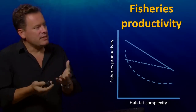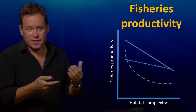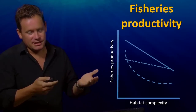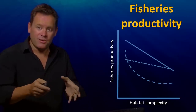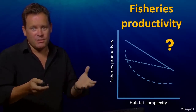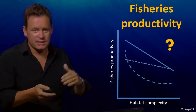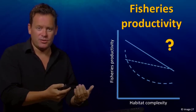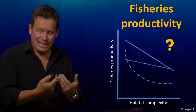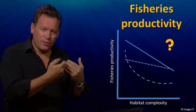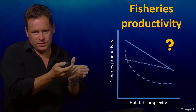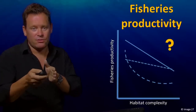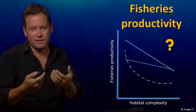Ultimately, we want an ecological production function — a relationship between fisheries productivity and the complexity and health of a coral reef. At present we often don't know the shape of that relationship: is it a linear decline, or is it curvilinear? Determining the answer is very important to accurately convey how failing to manage a reef effectively could lead to reduced reef complexity and, in turn, a reduction in the amount of fish people can harvest from that ecosystem.